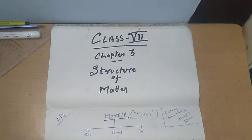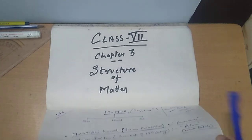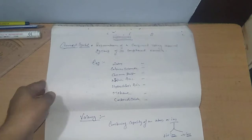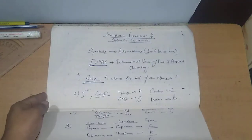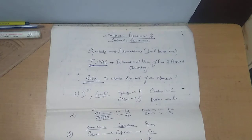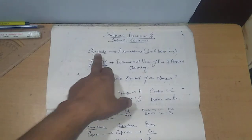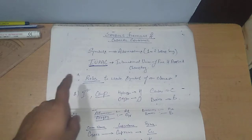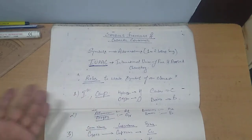Hello students, welcome back to the YouTube channel of Venus Public School. We will be continuing with Structure of Matter, Chapter 3, Class 7th. We have discussed elements, compounds, and mixtures yesterday. We started the discussion of chemical symbols, chemical formulas, and chemical equations, and we have completed the first topic — chemical symbols.